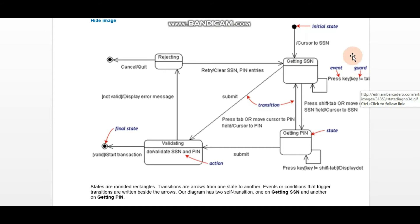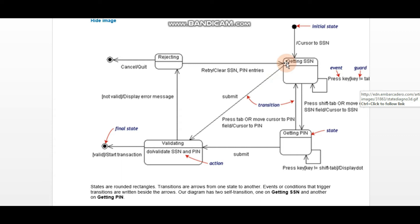Looking at our diagram — this is the login part of an online banking system. This is the initial state. The first step is getting the SSN (social security number). After getting the SSN, a transition occurs: you either get validated or proceed to get a PIN. When you get a PIN, there is a transition back to getting SSN.